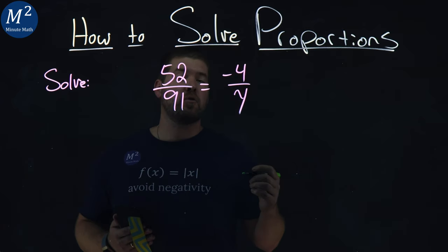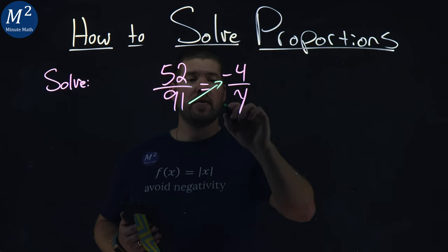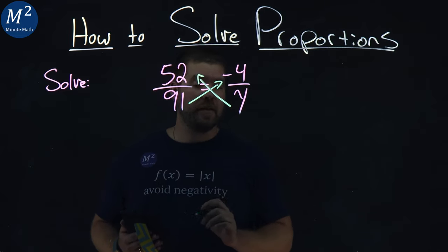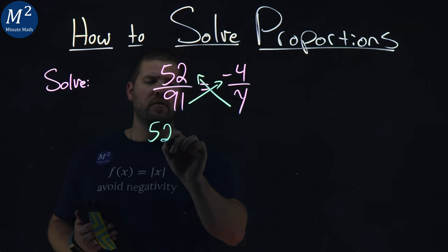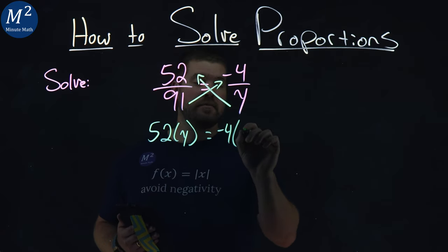Well, the first thing I'll do is cross multiply. 91 gets multiplied to the negative 4, and y moves up to be multiplied by the 52. So now I have 52 times y is equal to negative 4 times 91.